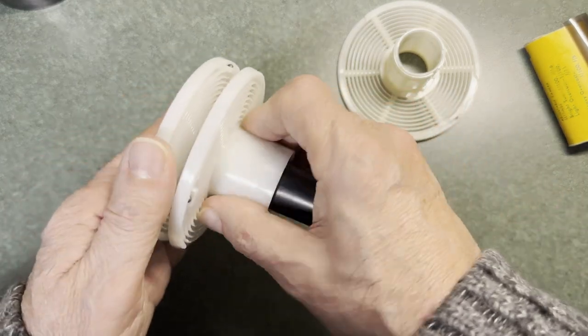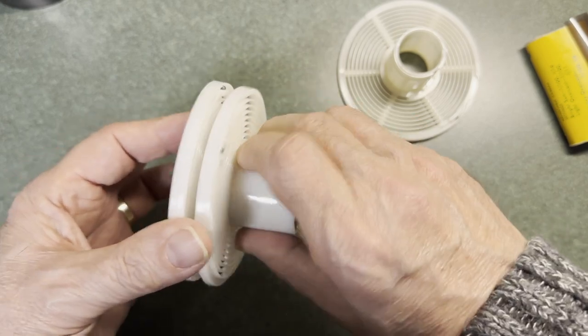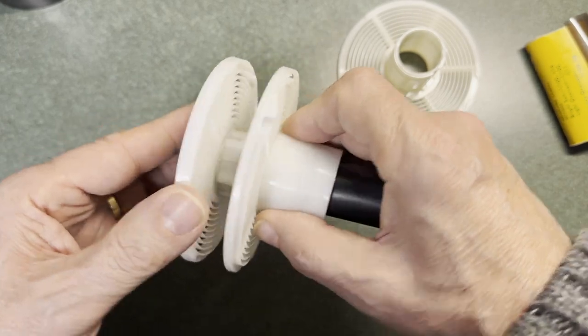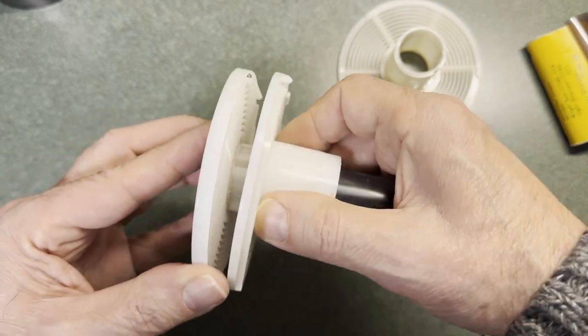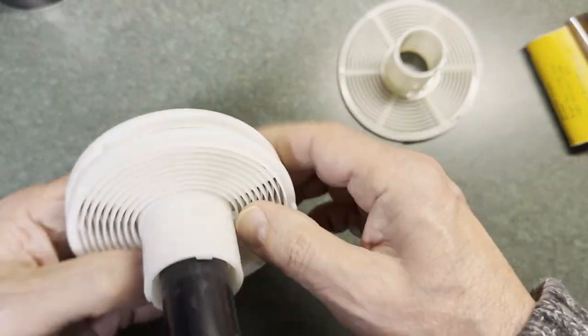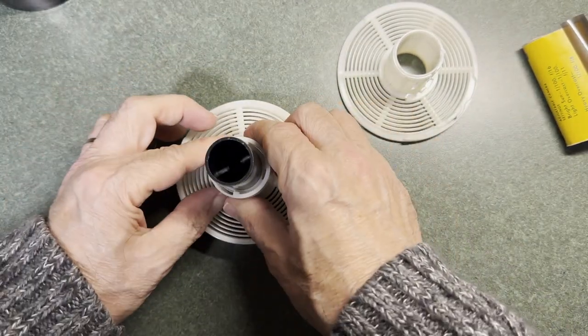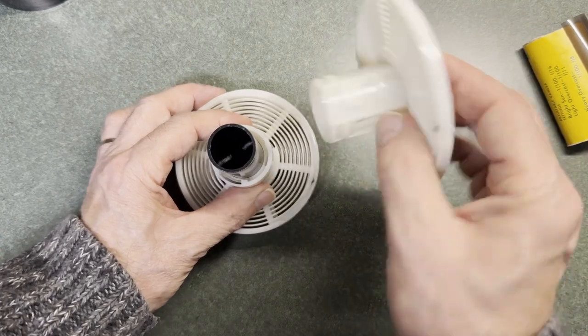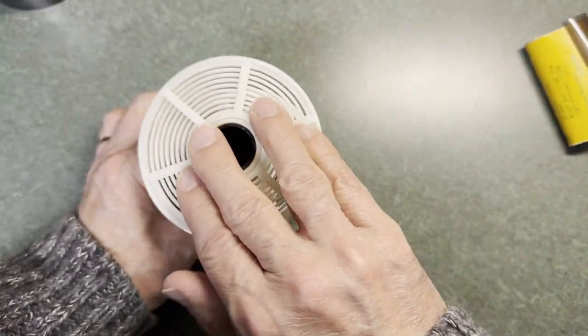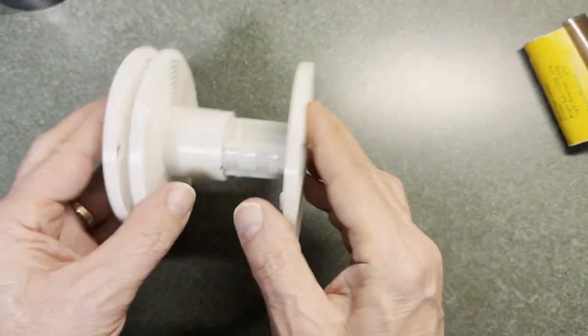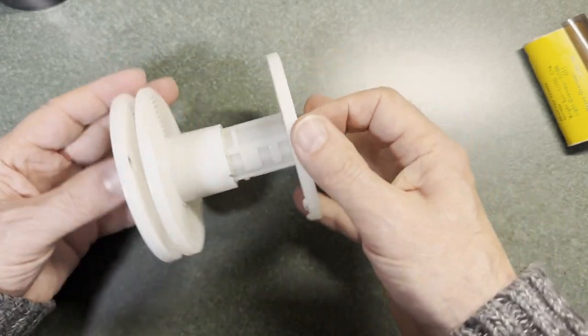We're just going to rotate that till we find a spot where it seats. That's as good as I'm going to get it right there. Then we're going to take that second piece and put that down on top of the first, and rotate that so the tabs line up like that.